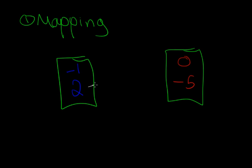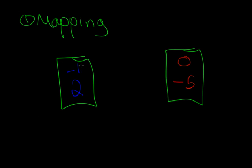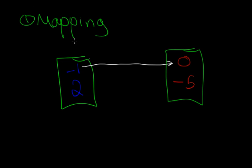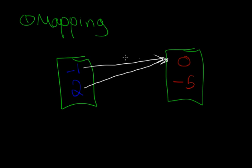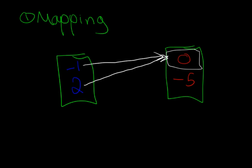Alternatively, the function could produce negative five for negative one and zero for two — you can crisscross the arrows. What isn't allowed is having two different outputs for one input — not good, not allowed. However, it is allowed to have two different inputs map to the same output; you still have one output per input. That's the first way to represent a function.